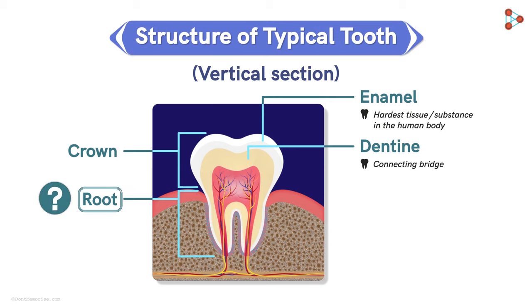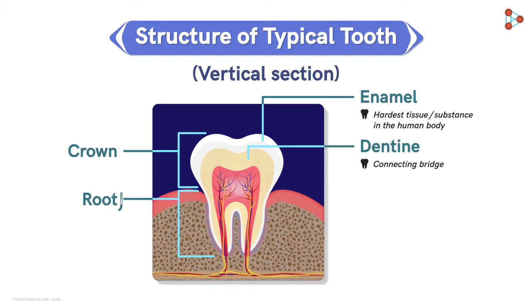Root? Do teeth also have roots? Yes, they do. This region is referred to as the root of the tooth. Just like plant roots, these roots help in anchoring the tooth firmly in the socket of the gums.